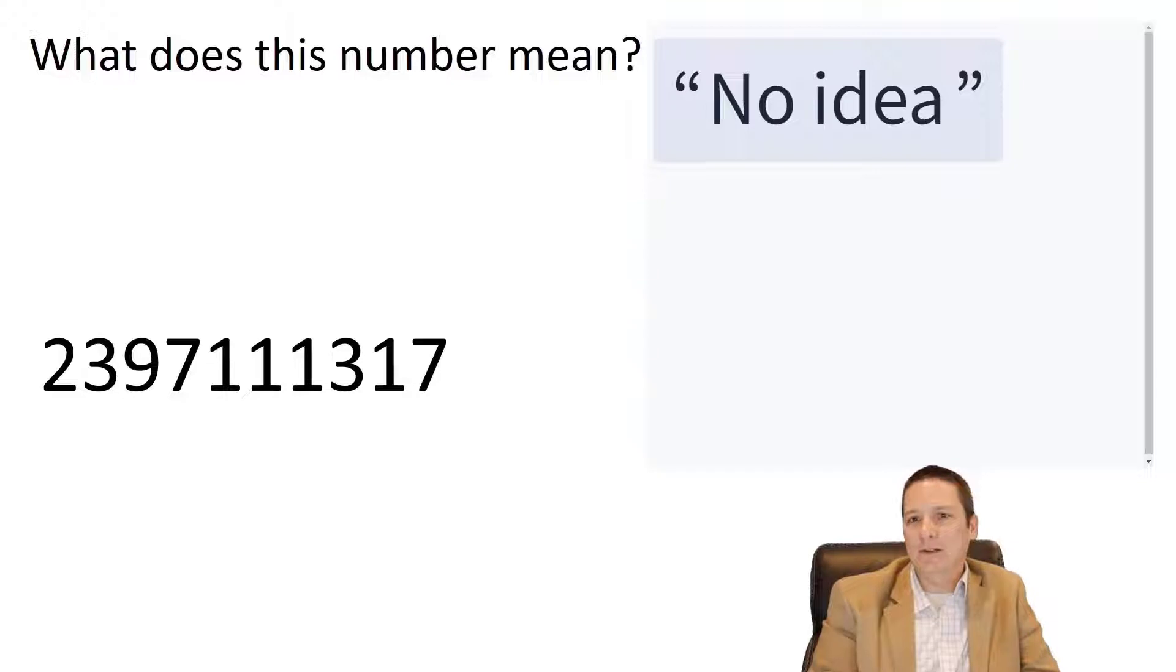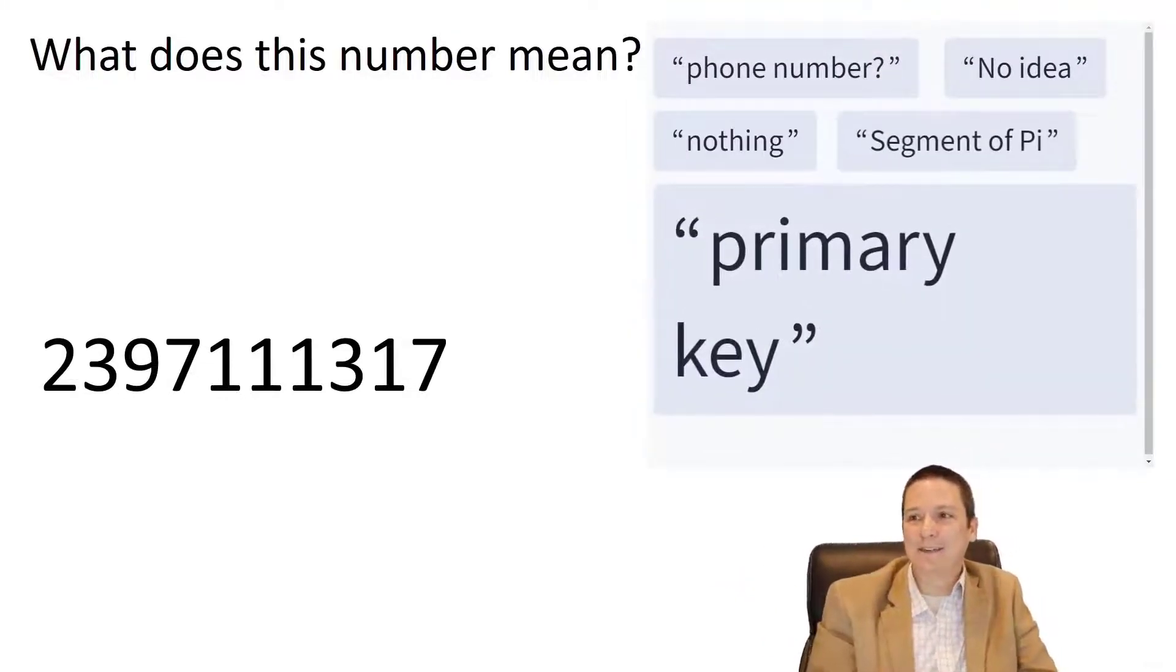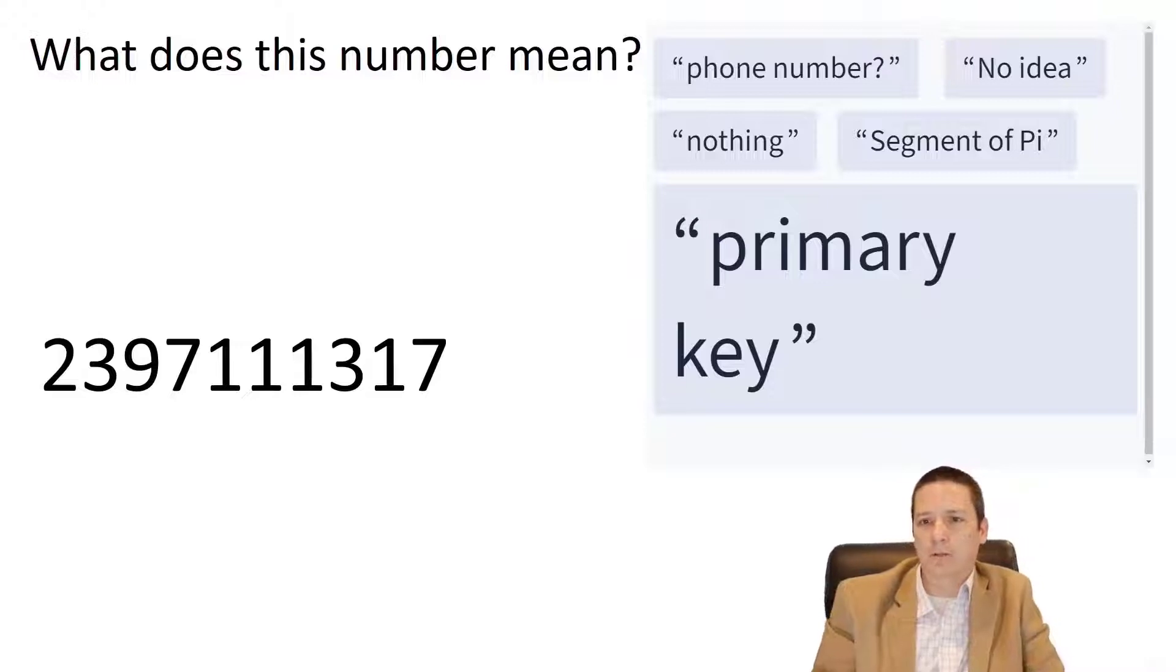It could be a lot of things, right? Phone number, a segment of pi. I bet it's in there somewhere. We could use this as a primary key. This would probably be an artificial primary key, but we could use it as some type of identifier.